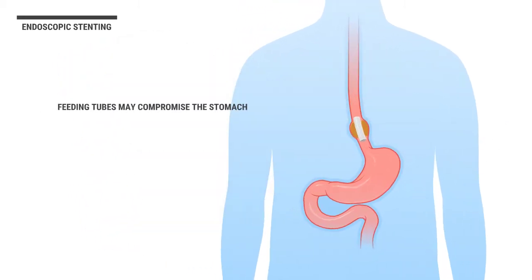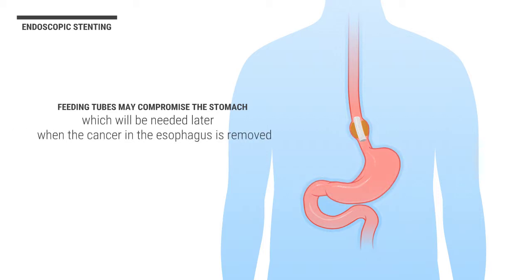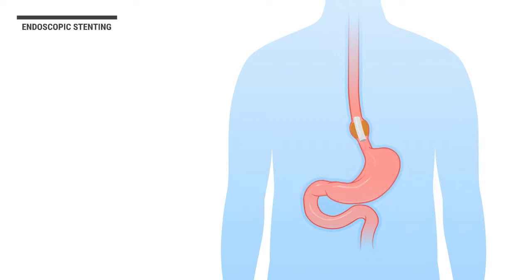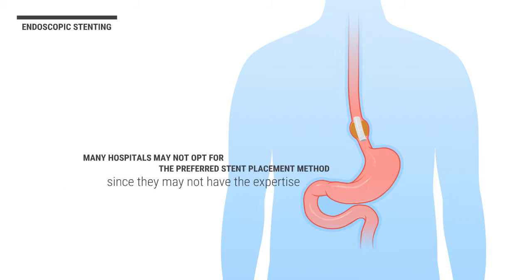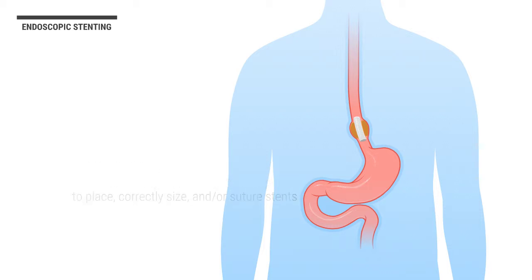Feeding tubes may compromise the stomach, which will be needed later when the cancer in the esophagus is removed. However, many hospitals may not opt for the preferred stent placement method since they may not have the expertise to place, correctly size, and/or suture endoscopic stents.